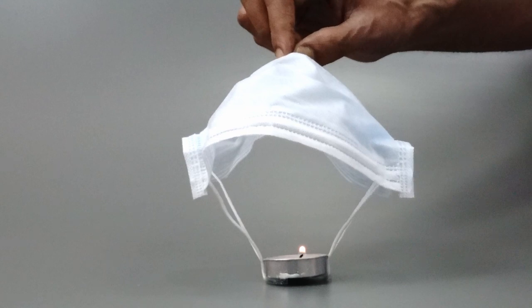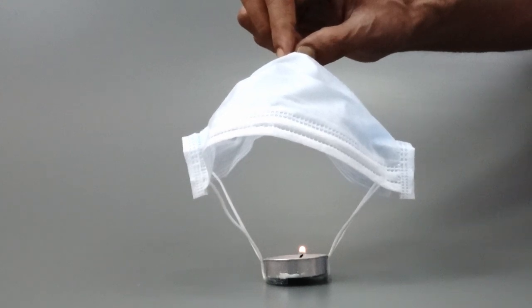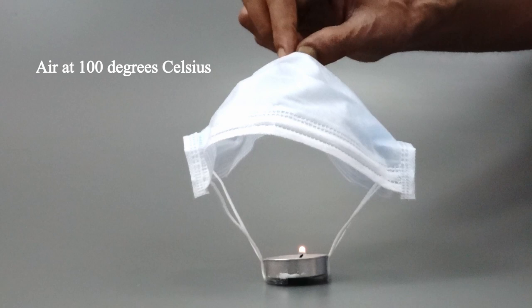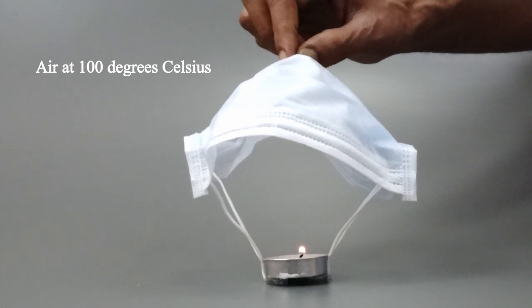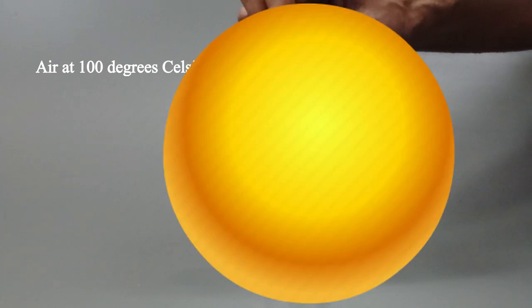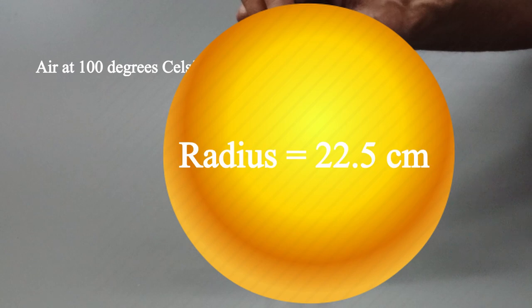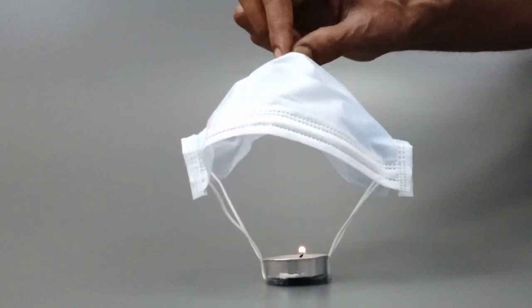If we want to generate this amount of force and considering the warm air at 100 degrees Celsius, we require a hollow sphere size of radius 22.5 cm. This is much larger than what the mask canopy forms. Even the canopy isn't closed.